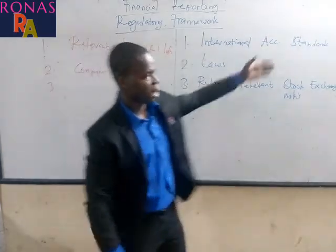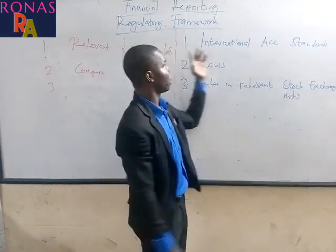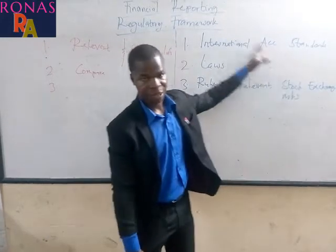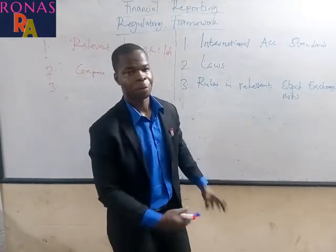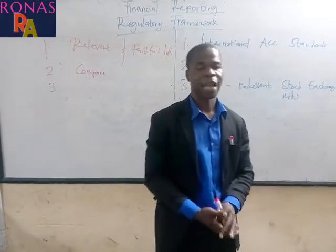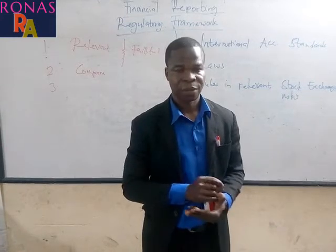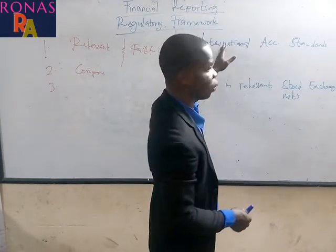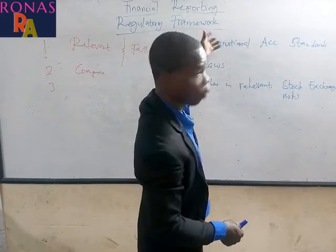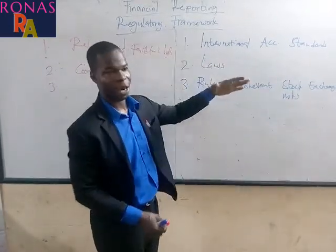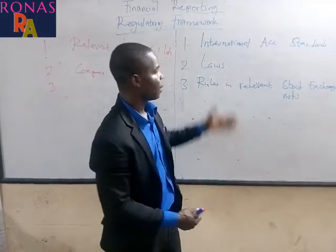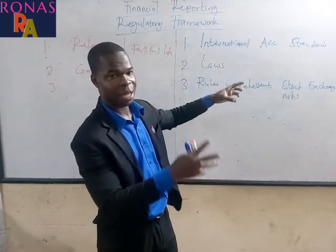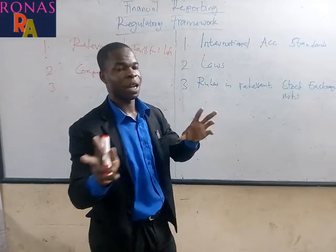The first group is the international accounting standards — standards set by a board and adopted by almost all countries in the world for use in the preparation and presentation of their financial statements. The regulation governing corporations is three in number: we have the international accounting standards, we have laws, and we have rules relevant to the stock exchange.